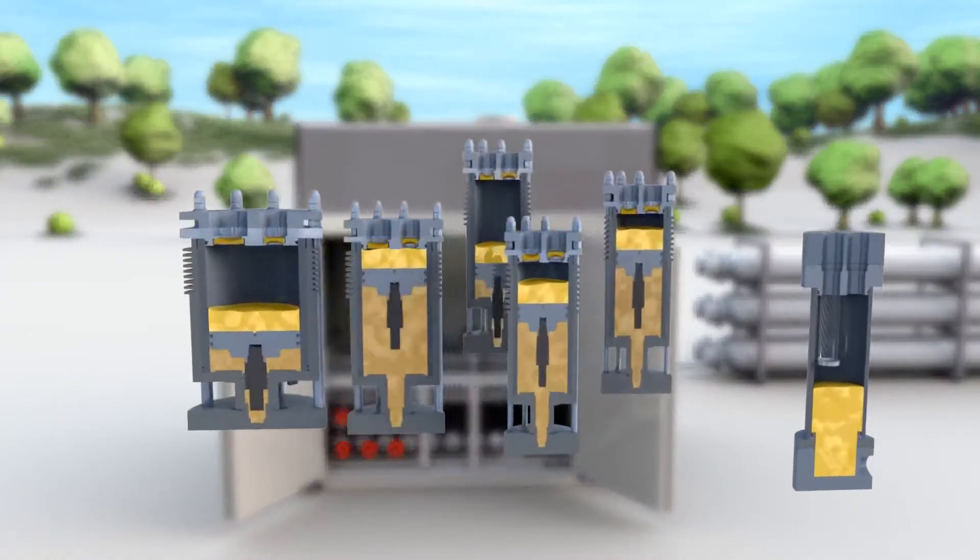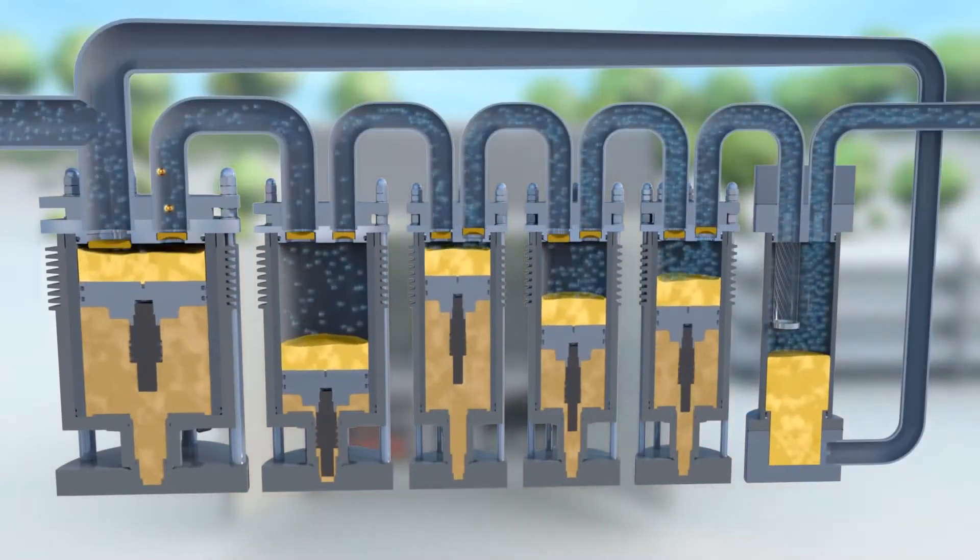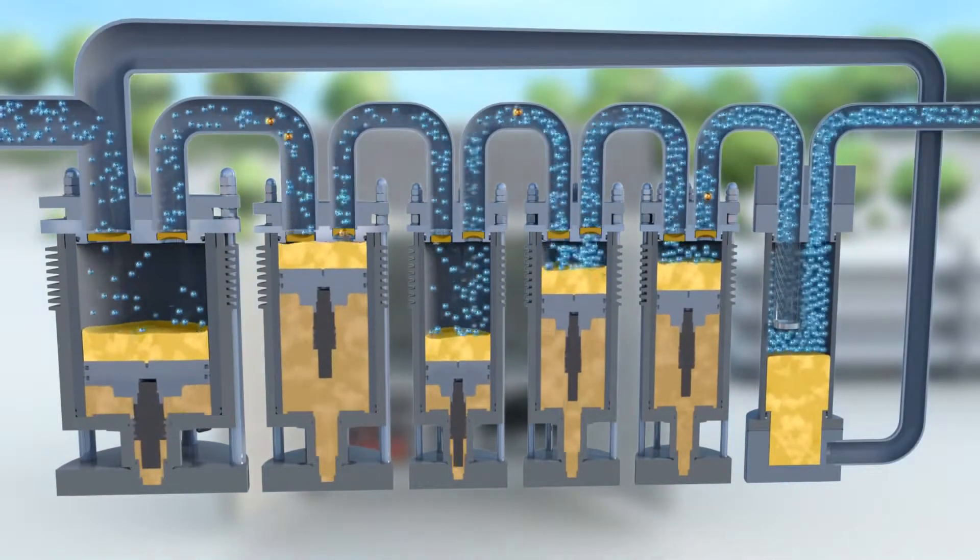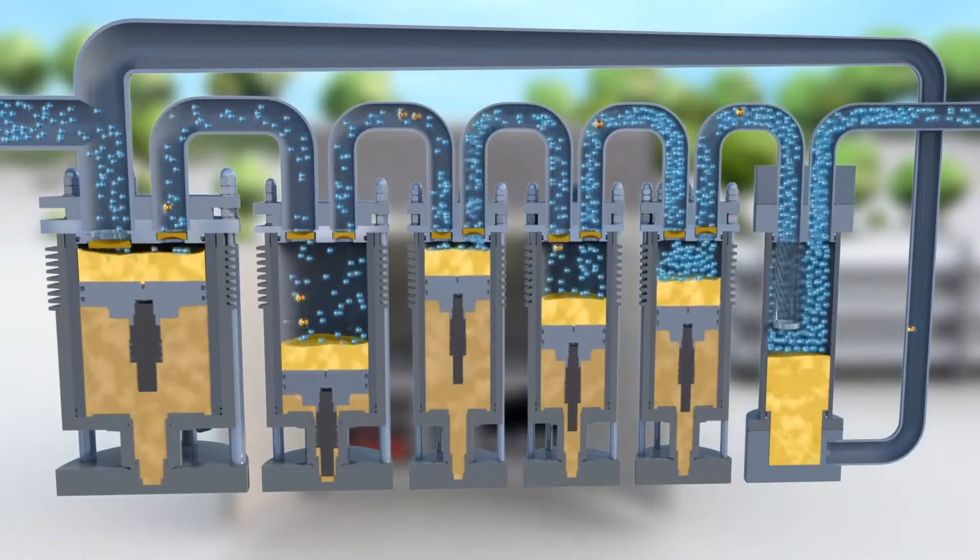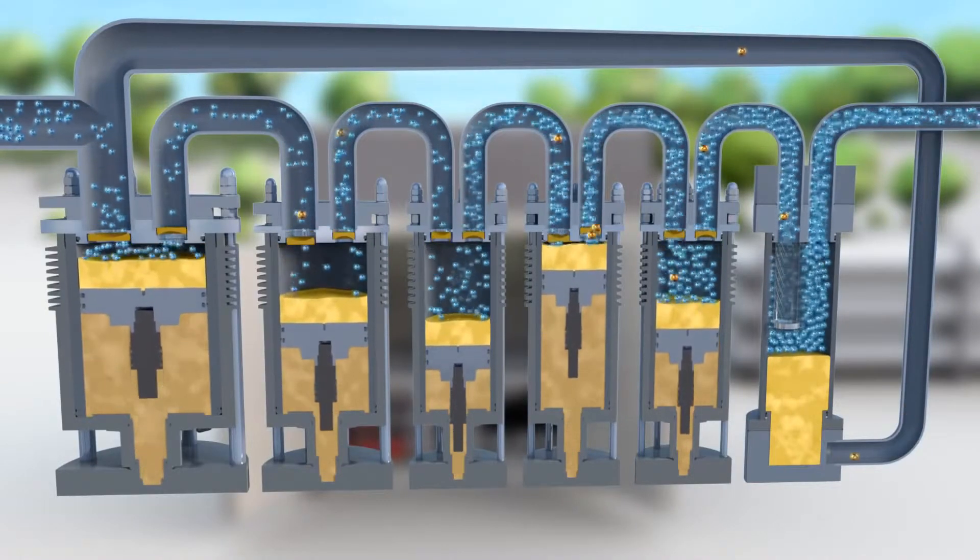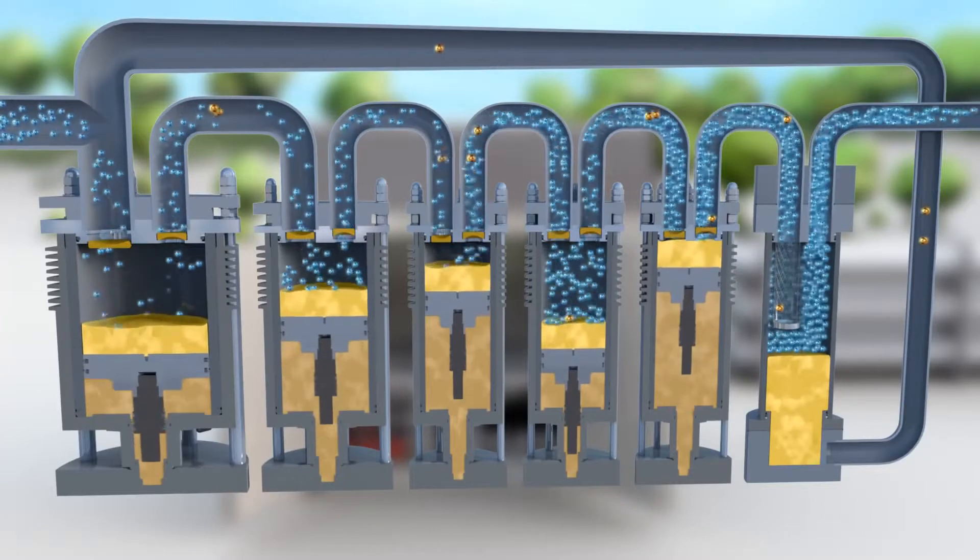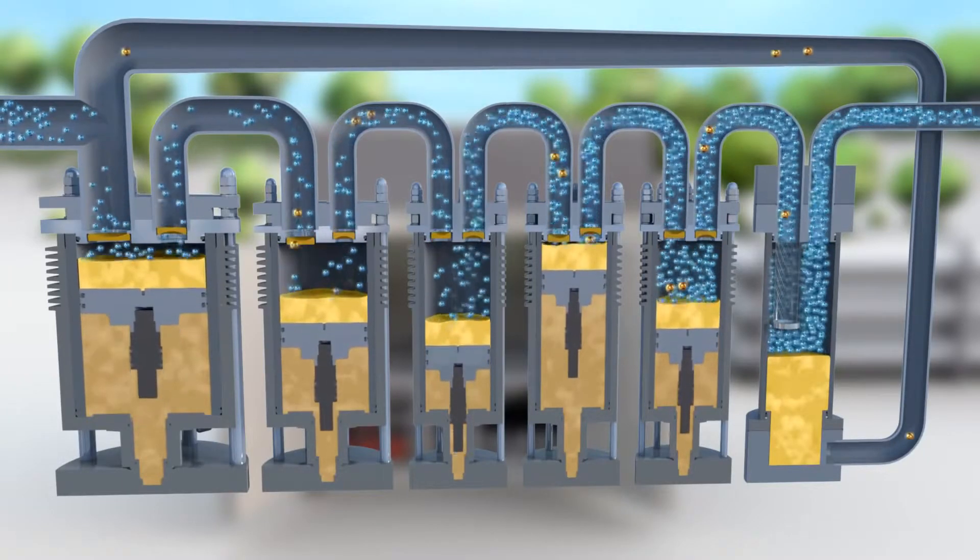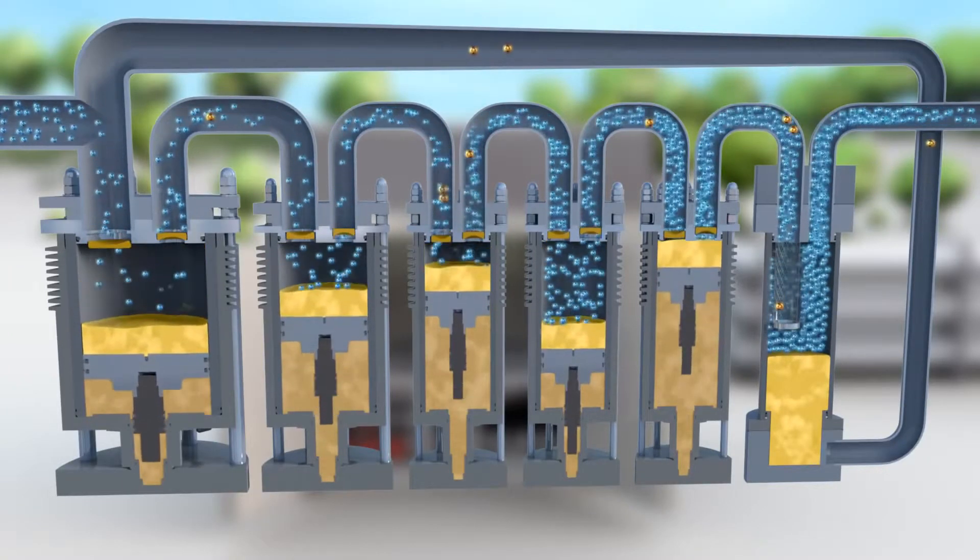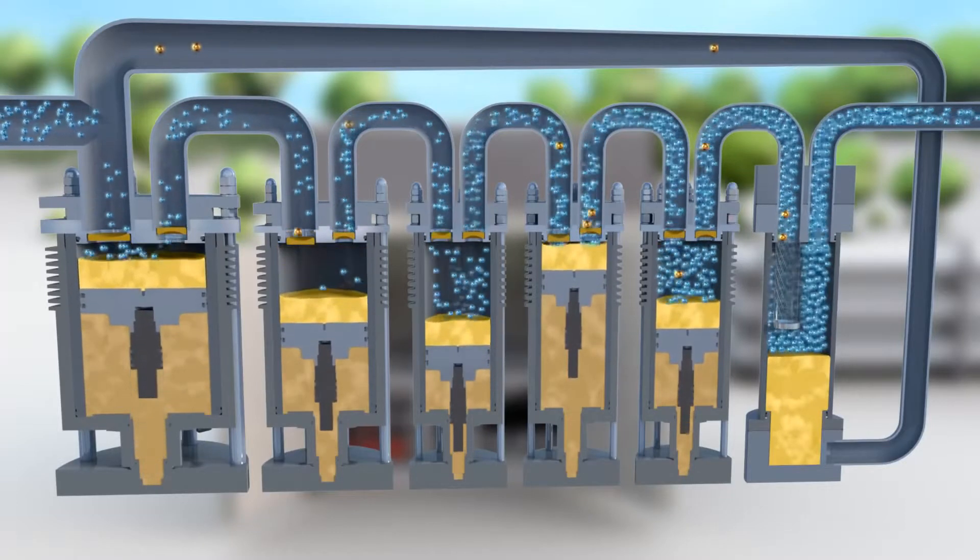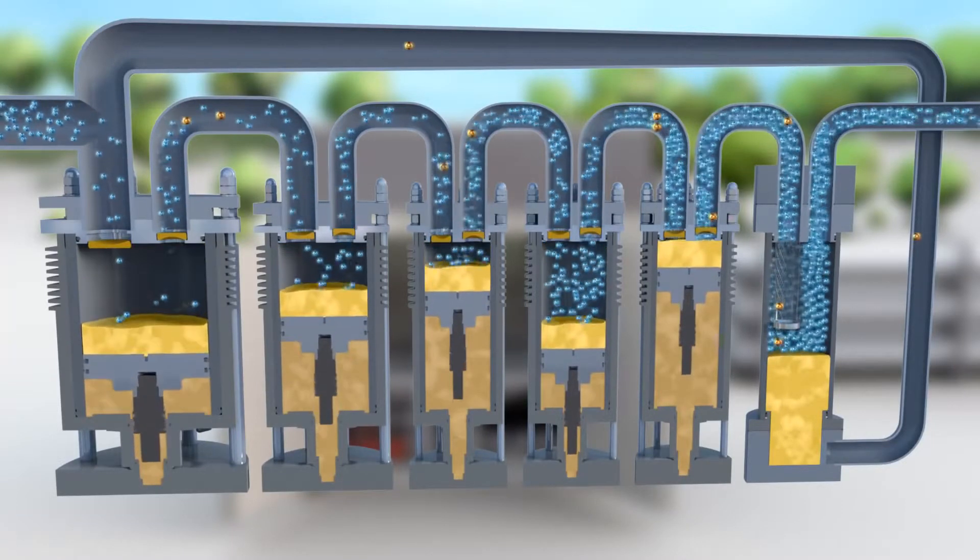For hydrogen fueling stations, Linde has developed a five-stage ionic compressor. The pistons of the machine move up and down hydraulically. On the top of the pistons there is the ionic liquid which is compressed through the compressor cylinder as a liquid piston together with the hydrogen. At the end of the compression process, the ionic liquid is separated from the hydrogen by the separators and returned to circulation.